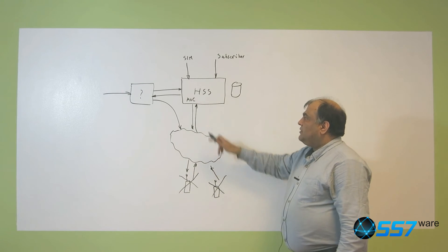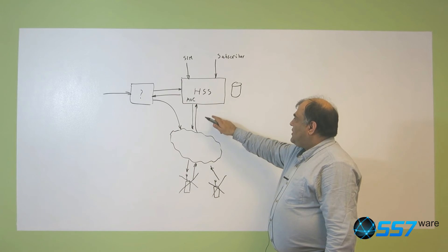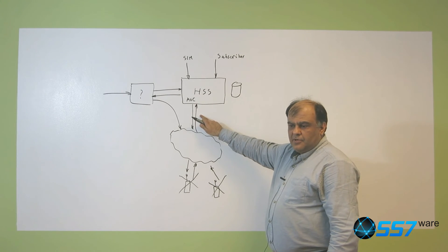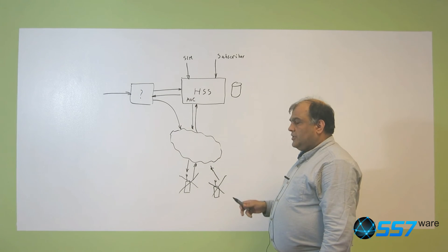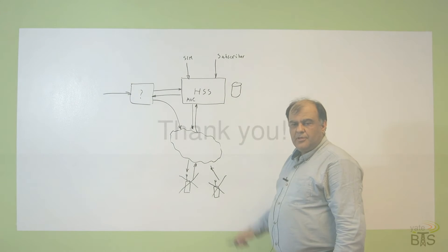So this is the most important. It contains all the information about the subscriber and makes it accessible either for the old MAP interface for 2G and 3G or for the new 4G interface based on the diameter protocol. Thank you.